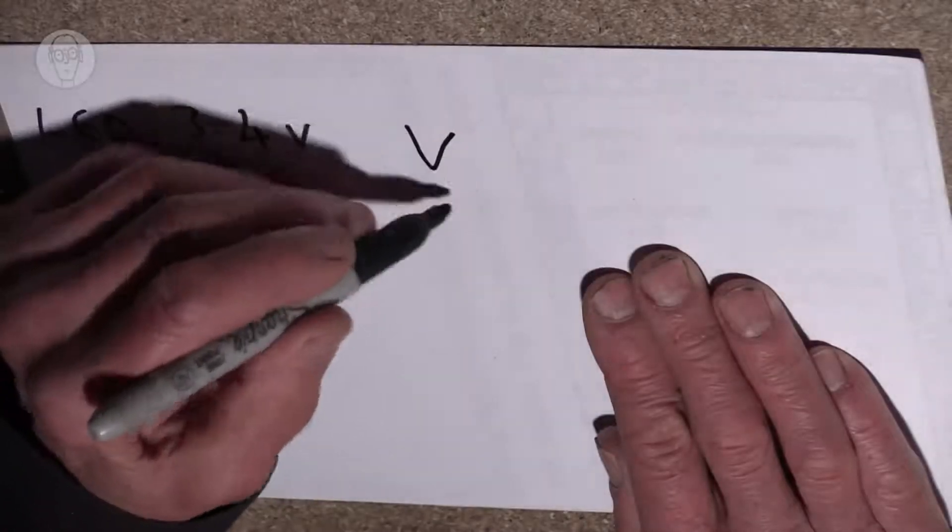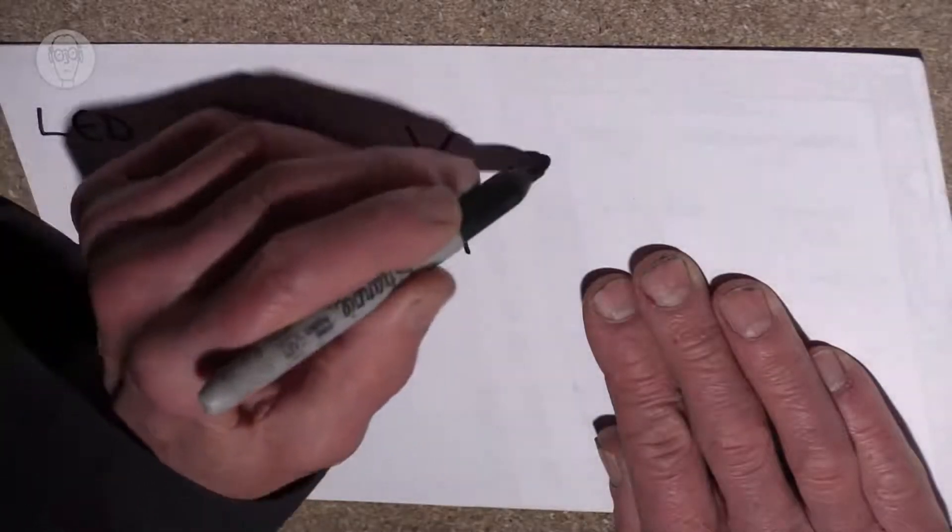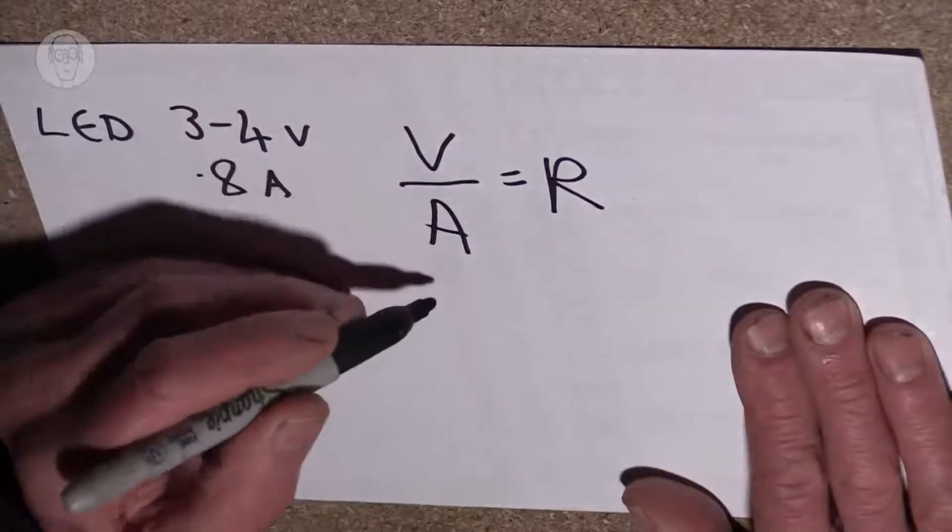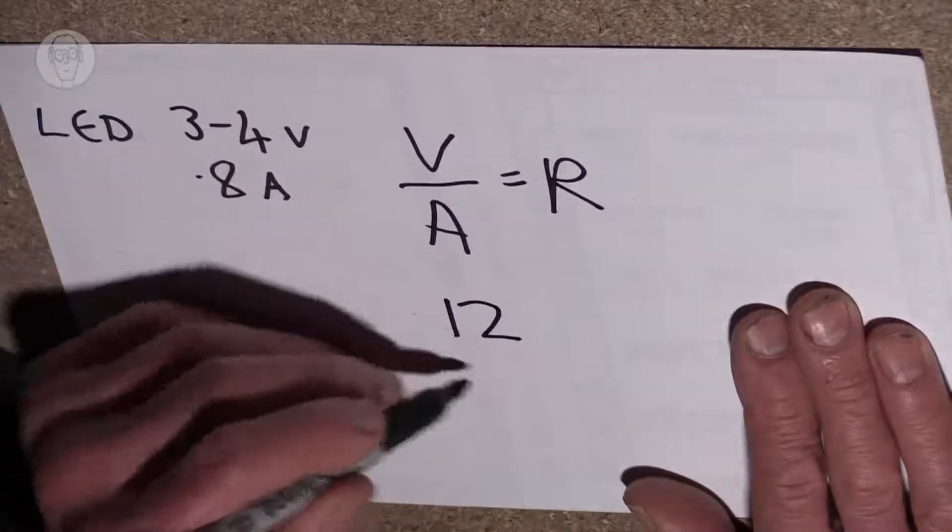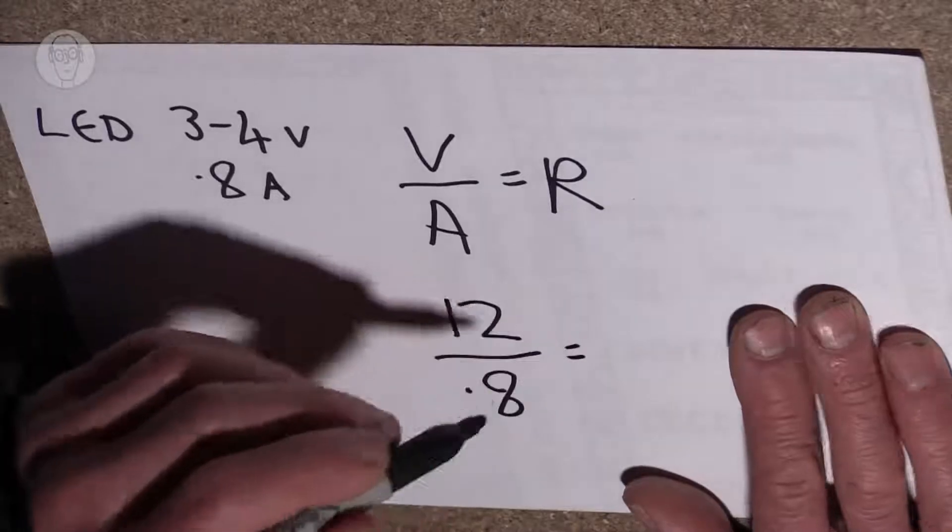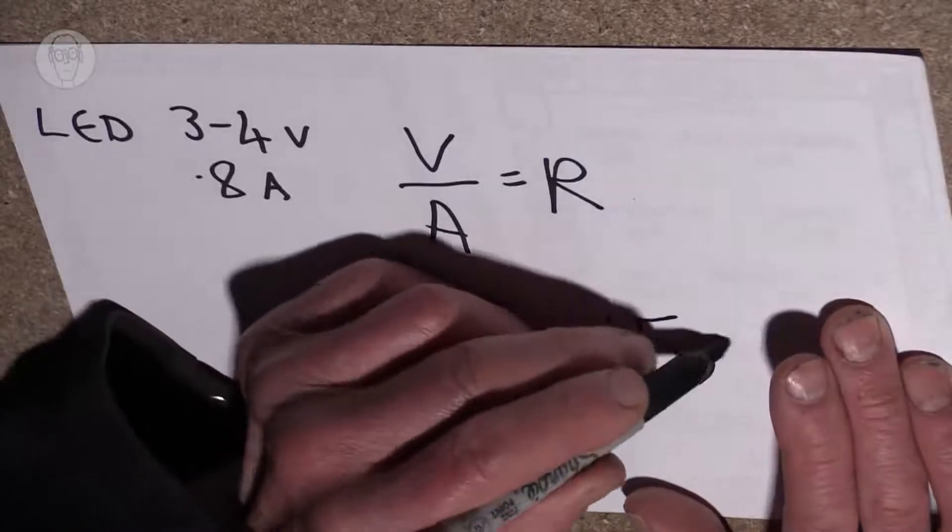By Ohm's law, volts over amps equals R, so you have your 12 volts on top and your 0.8 underneath, and that gives you a resistance of 15 ohms.